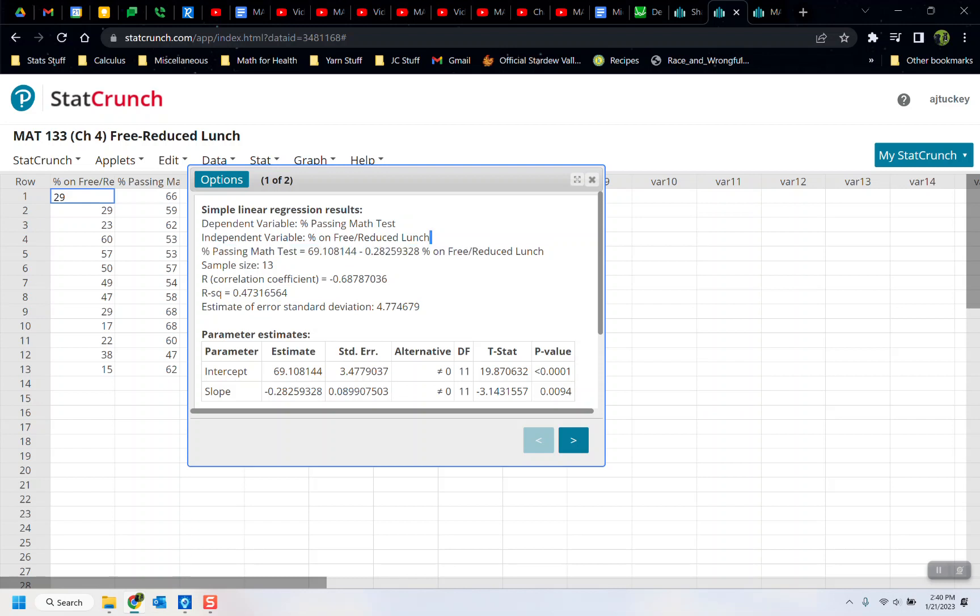The top part has everything we need. The regression line is right there. After it says what the Y variable and the X variable are, then it's saying Y equals 69.108 take away, because that's a subtraction, 0.282 and some change times X.